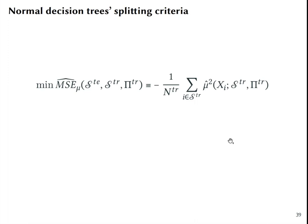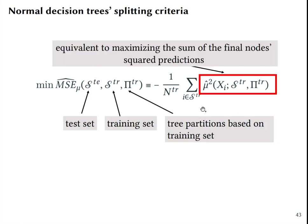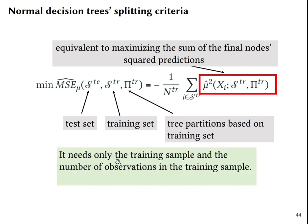Normal decision trees try to minimize mean squared error in general for any test set, but all we have is a training set and the tree partitions are based on the training set. We can show that minimizing mean squared error is equivalent to maximizing the sum of the final nodes squared predictions. It needs only the training sample and the number of observations in the training sample.